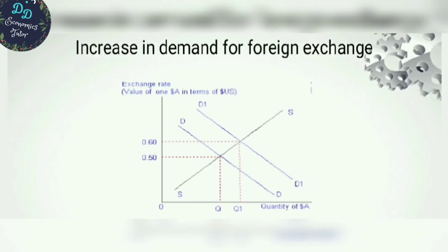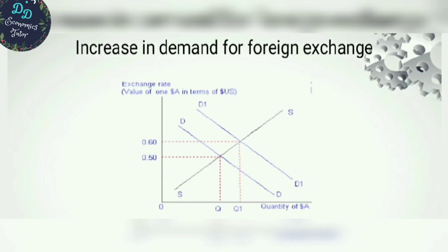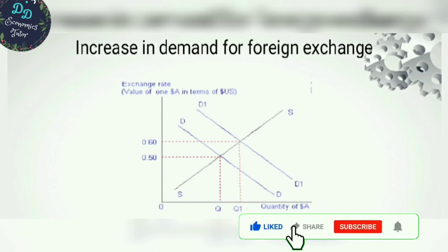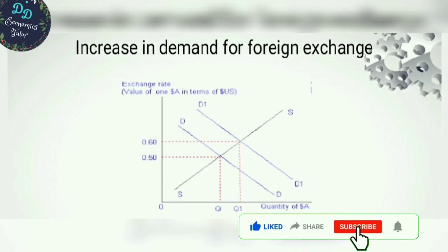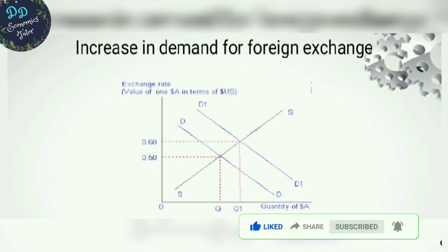Due to an increase in demand for foreign exchange, the demand curve shifts rightward. A new equilibrium point is achieved at a higher exchange rate. This rightward shift in the demand curve shows the depreciation of the domestic currency — demand increases, foreign exchange rate increases.